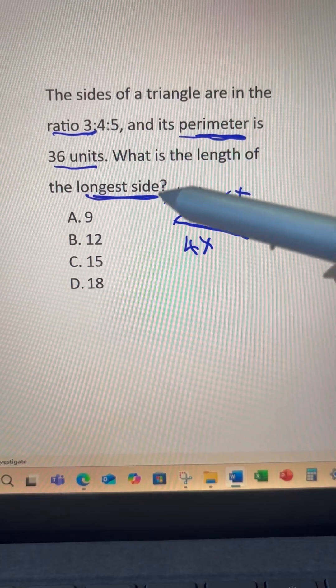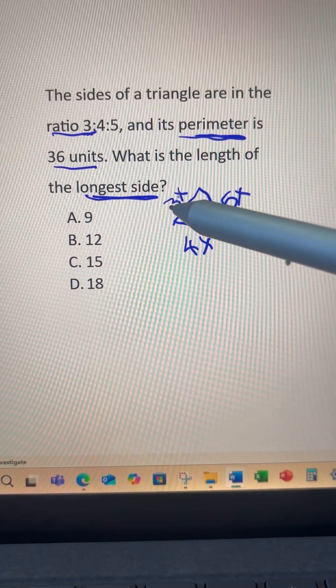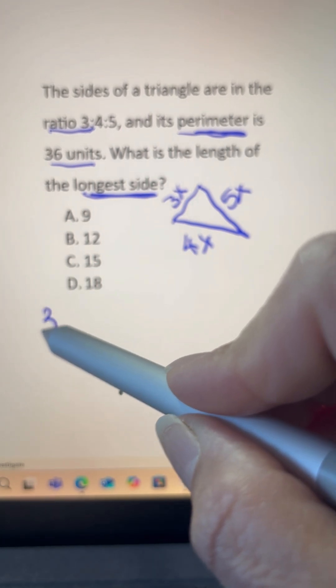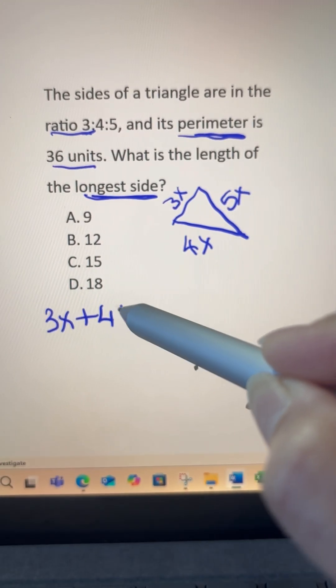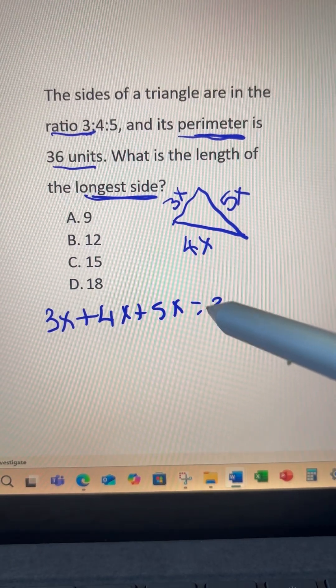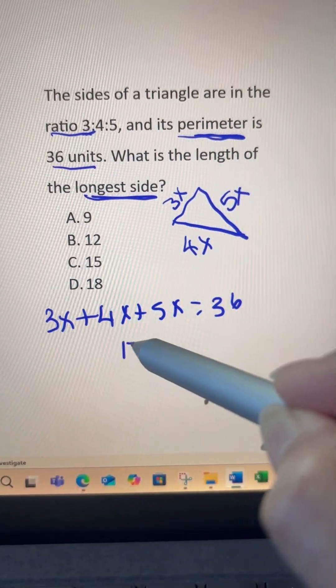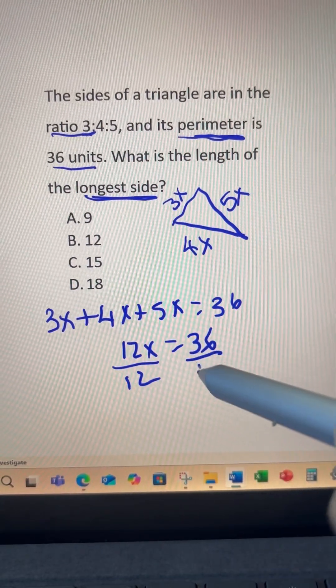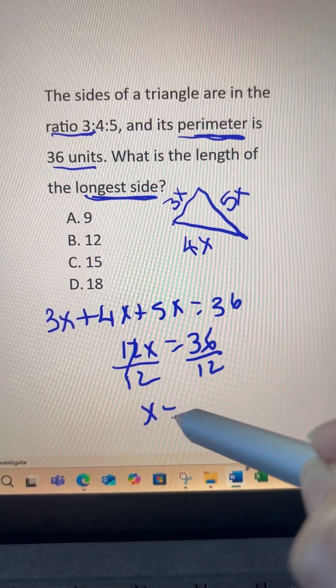Given its perimeter, what is the meaning of perimeter? We add each side. So we can make an equation here. 3x plus 4x plus 5x equals 36. Combine like terms so it's 12x equals 36, and then divide by 12. So x is 3.